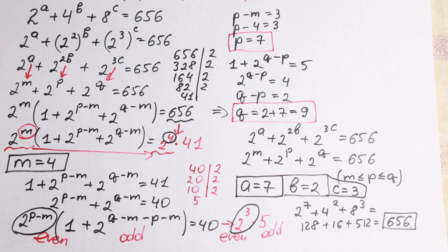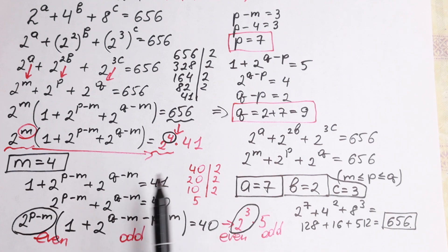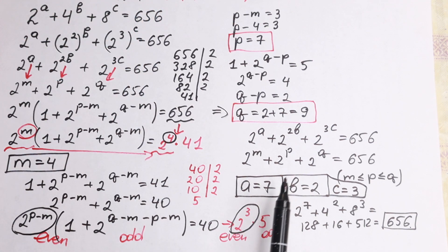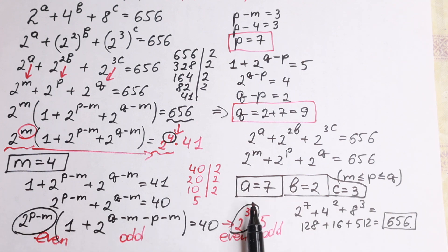If you still have any questions, write a comment. I hope you understand this explanation — why a equals 7 and not some non-integer value — because we want natural number roots, and this is the one and only case. Thank you so much for watching. Have a great day!